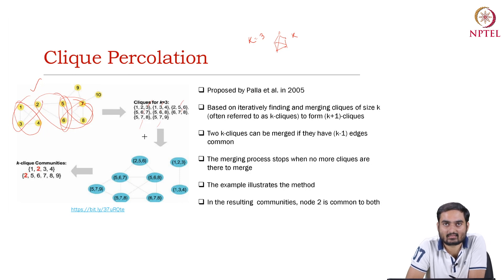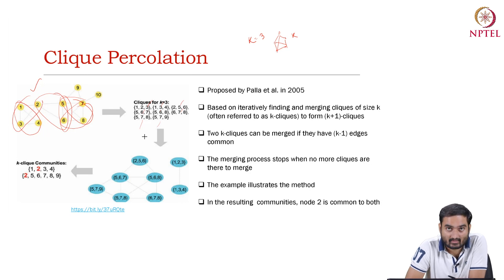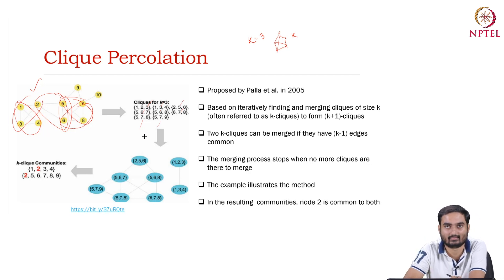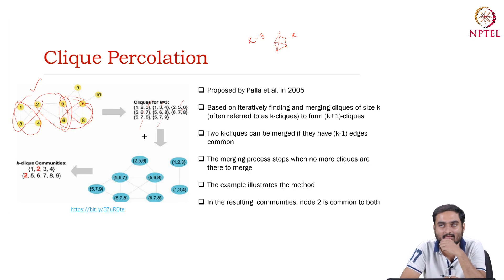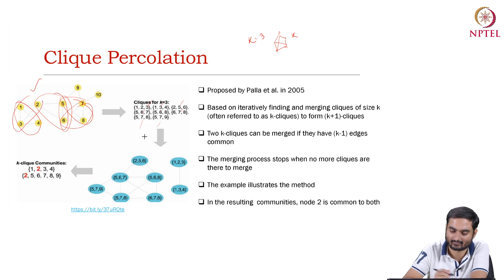The first task is to detect cliques of size 3. Now k can be 4, k can be 5 — it is a hyperparameter that you can set beforehand. Once you detect cliques, remember clique detection itself is challenging. Let us assume that we have the resources to detect cliques and we identify them.